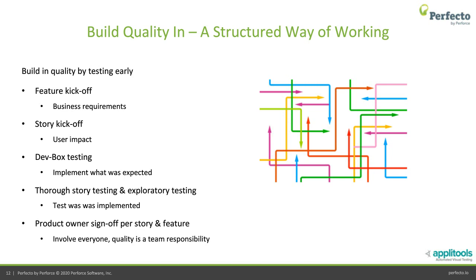After dev box testing, there must be thorough story-level testing — mostly exploratory and risk-based. Test what hasn't been automated, test edge cases and boundary values, and ensure no regression is creeping in while new functionality works as expected. The responsibility of testing doesn't end there — involve other roles at the story level, give demos, get quick feedback so any required changes can be done before the product gets close to the release date.